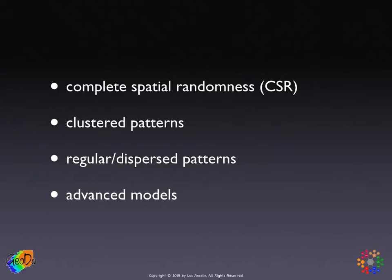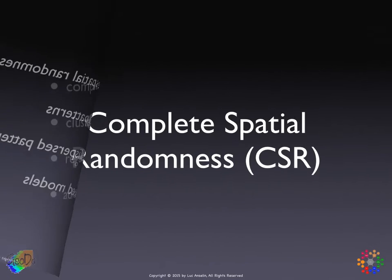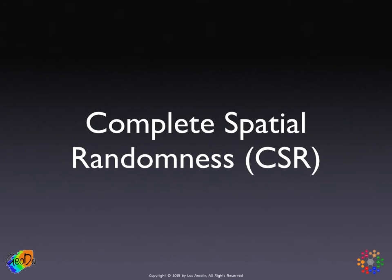Here, the alternatives are either clustered patterns or regular or dispersed patterns. And then we'll briefly give some examples of more advanced models without going into too much detail. So let's start with complete spatial randomness, or CSR, as it's referred to.